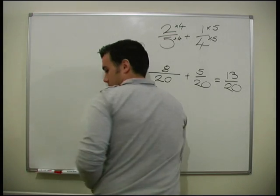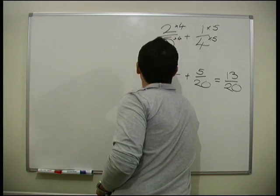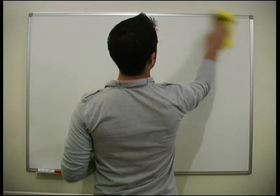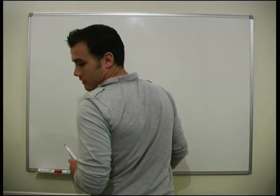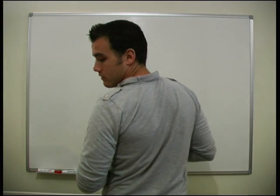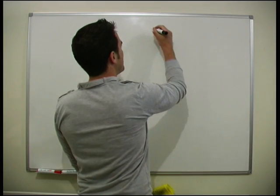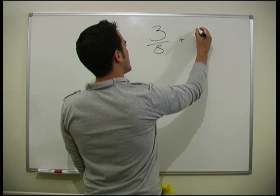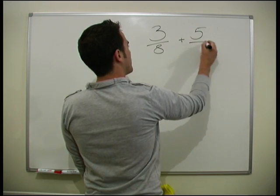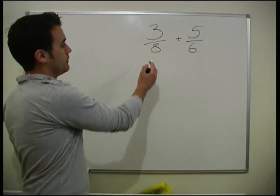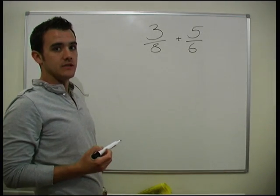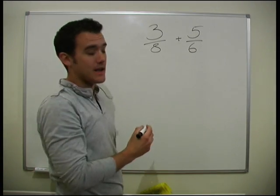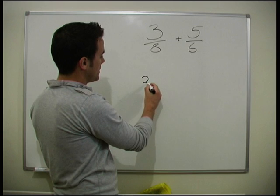Let's look at one more, slightly more complicated example. Let's look at 3 eighths plus 5 sixths. In a previous lesson, we actually found the lowest common multiple of 8 and 6 was 24. So we can actually, once we've found that out, we can see that we have 24 on the bottom.